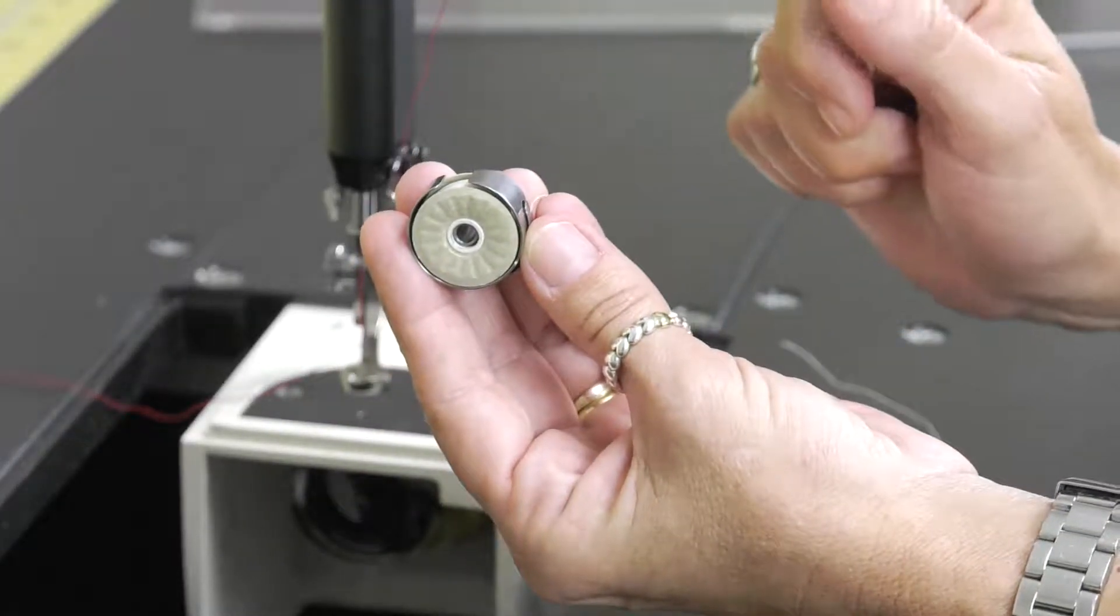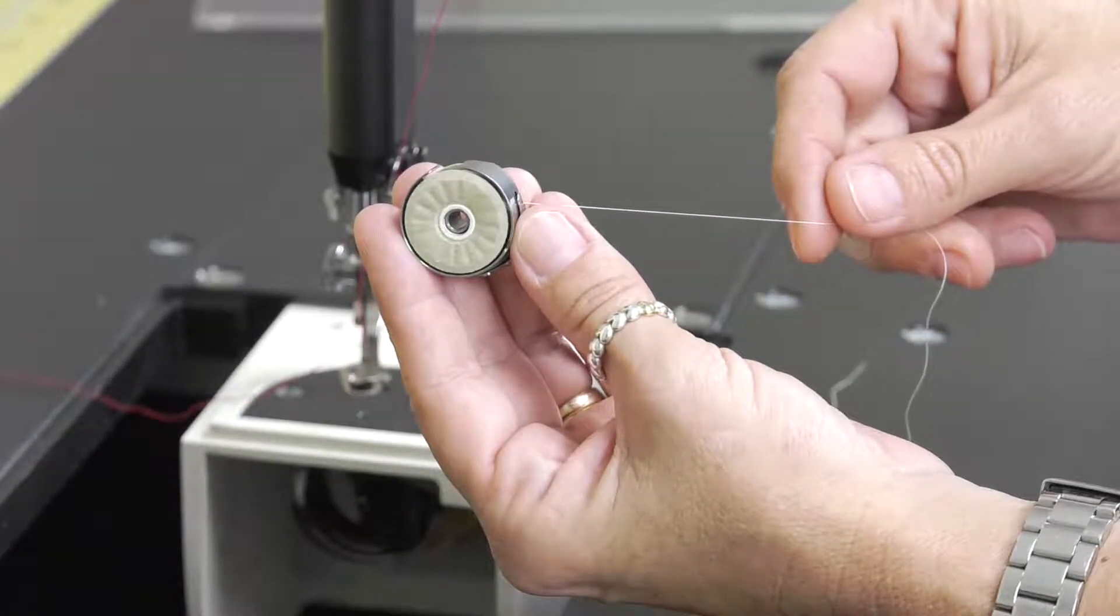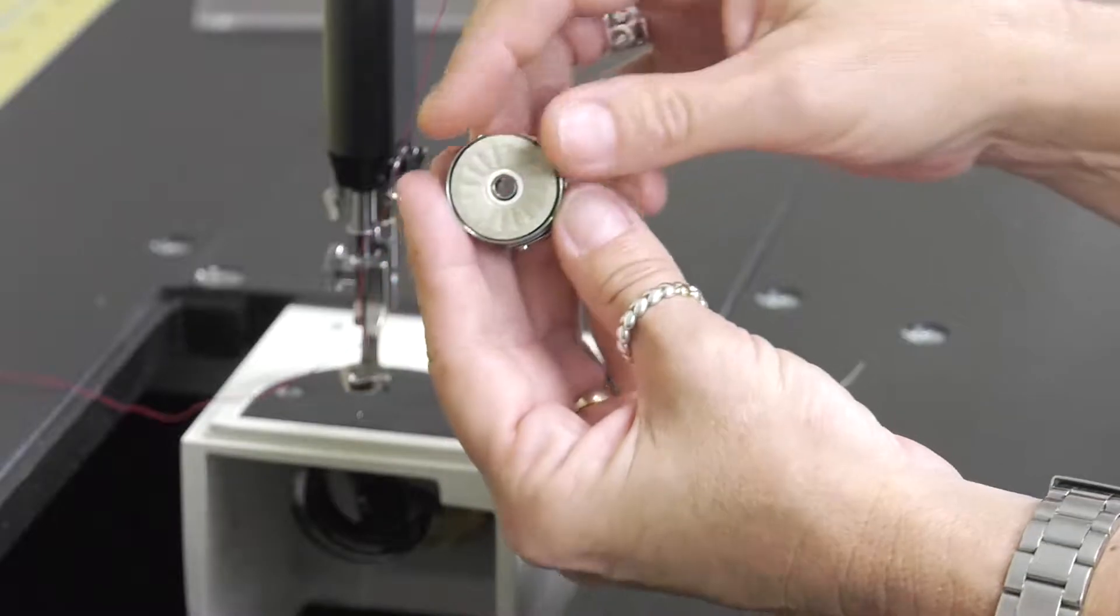The opening is at the top, I'm holding it with my first finger and my thumb, pulling the tail, and the bobbin is spinning counterclockwise. So that is correct.